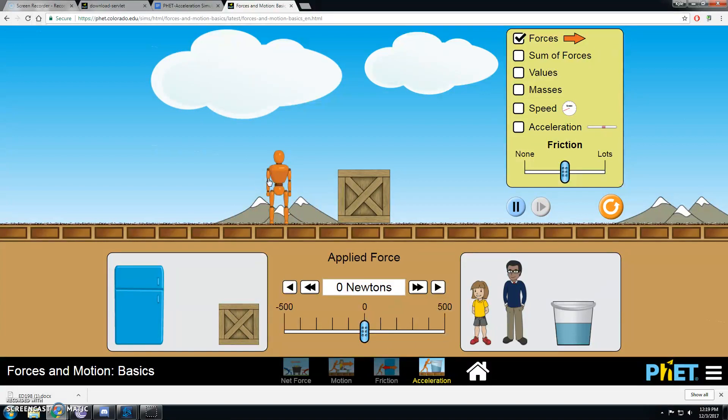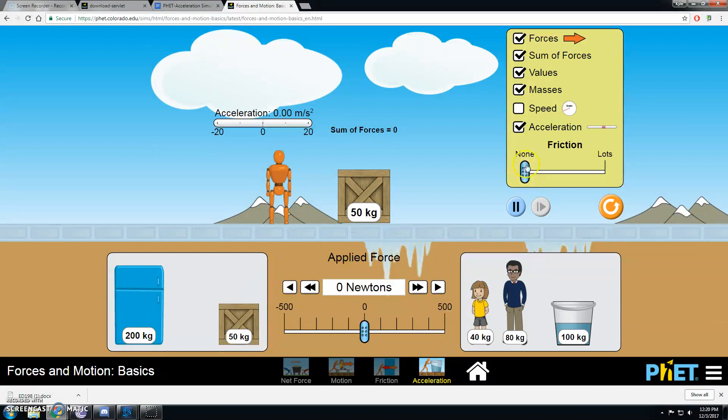Now, in order to do that, we need to check off a couple of the boxes over on this part of the screen. So we need to check off the forces box, the sum of forces box, the values box, masses, acceleration. And then we also need to make this a frictionless surface, right?